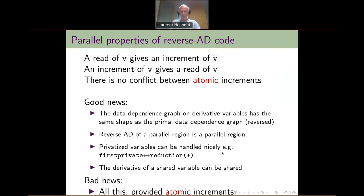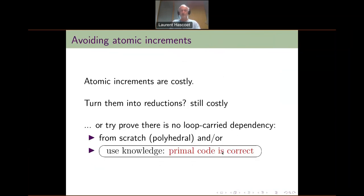All of this is true provided increments can be atomic — and that's the bad news, because atomics are costly. How can we compensate? We could turn them into reductions, and we tried that. It's better, but it's still costly. So it would be much better to get rid of atomic pragmas when possible, to discover each and every case where an atomic pragma is not needed. This can be discovered by parallelizing compilers, for example using polyhedral methods, but there are limitations to that.